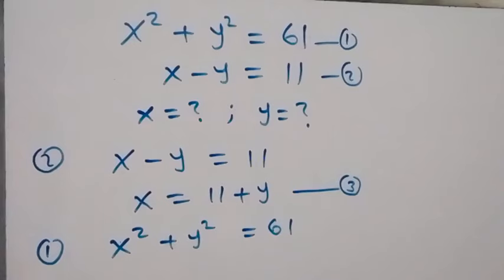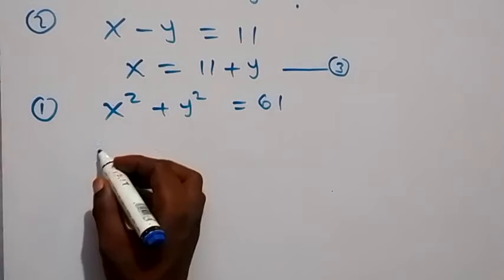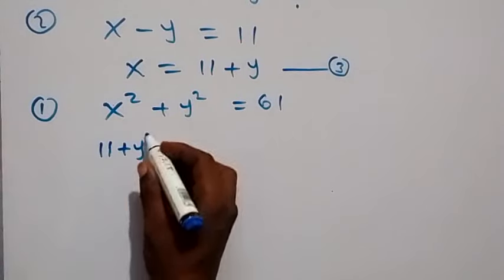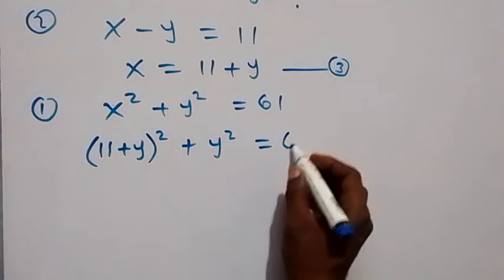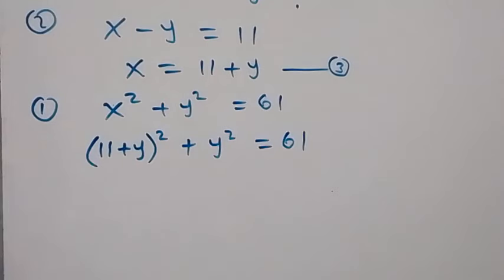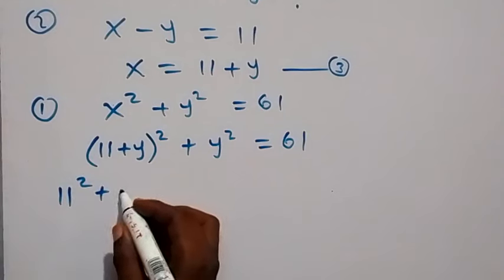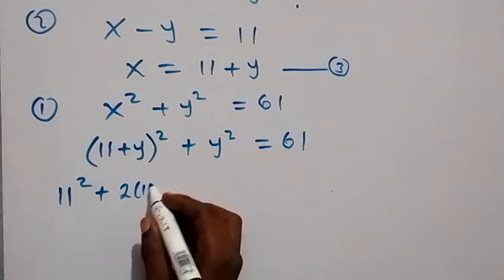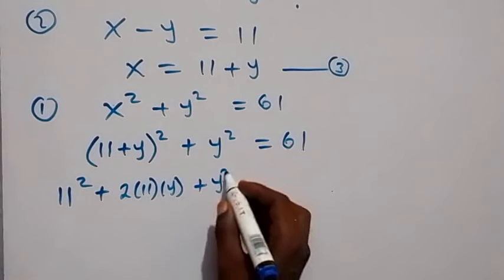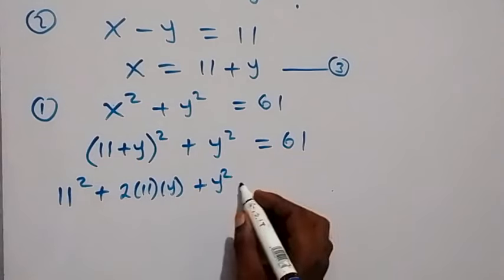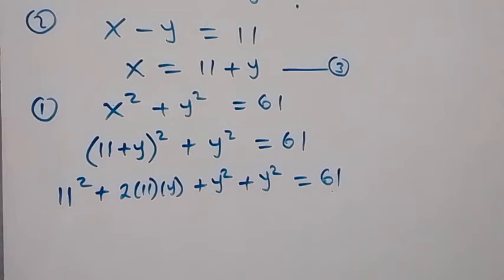Now let's substitute equation three back into equation one. We replace x with 11 plus y, so we have (11 plus y) squared plus y squared equals 61. The expansion of that is 11 squared plus 2 times 11 times y plus y squared, then plus this y squared, which equals 61.